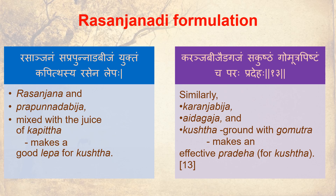Rasaanjana Formulation: Rasaanjana and Prabhunnaada Bheecham mixed with juice of Kabitha makes a good lepa for Kushta. Similarly, Karanjabheecham, Aedagajam, Kushta — ground with Go Mutra — makes an effective Pradeha for Kushta.